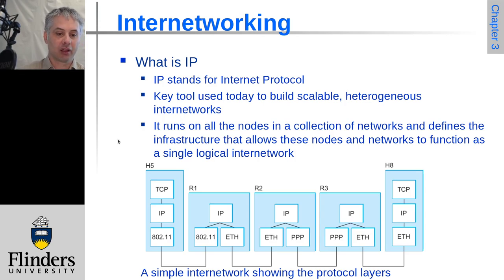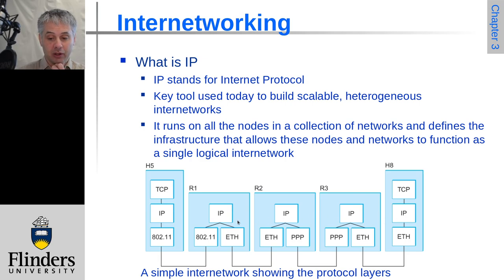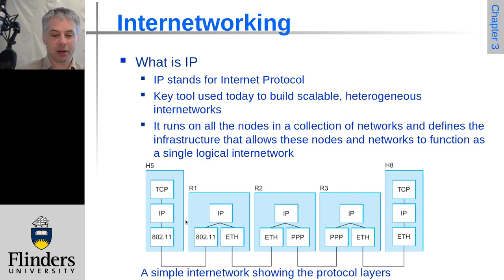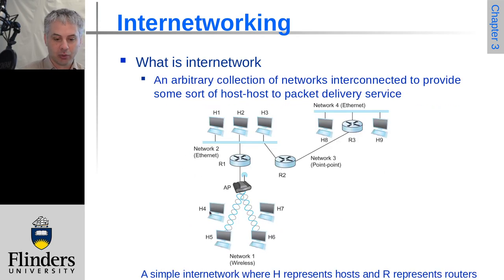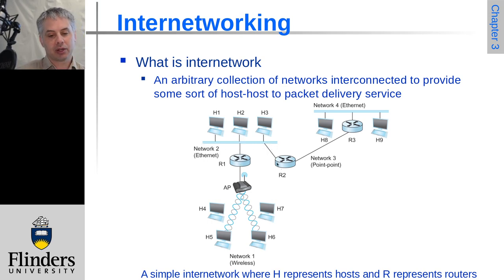We achieve internetworking using the Internet Protocol, which operates at Layer 3 in the layered network approach. Above IP we have TCP, UDP, and higher layers. IP must run on all nodes in the path. For host 5 and host 8 to communicate: from host 5 over wireless, through a router connected via Ethernet to network 2, then to router 2, to router 3 via a direct Ethernet connection, and finally onto the Ethernet that has host 8.